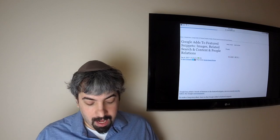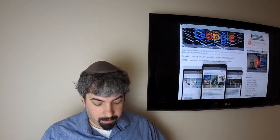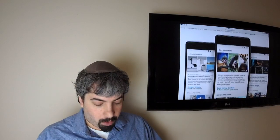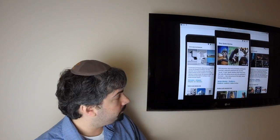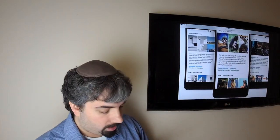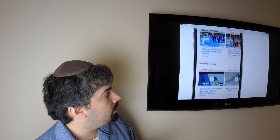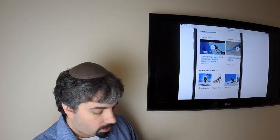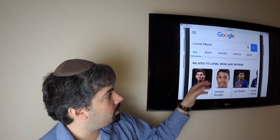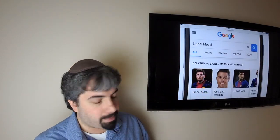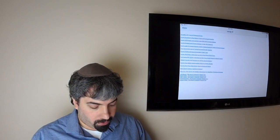Google announced that their featured snippets are getting better. They've added a bunch of little features including more images, related searches, and so forth in the featured snippets area. They also added related content as you can see in this gif—videos, people also search for, images, etc., and related people. So if you do a search of somebody, you can actually bring up related people in there as well. So that's an update to the featured snippets which Google confirmed.